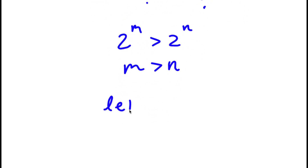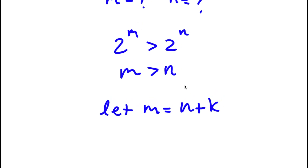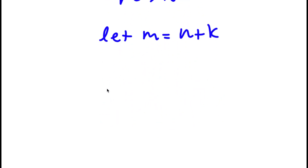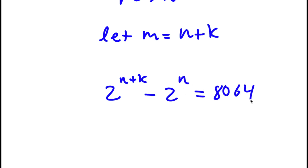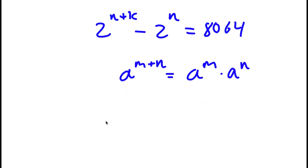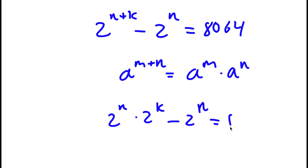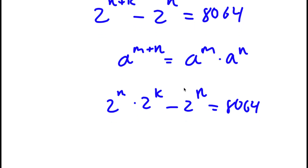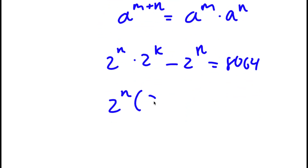I'm going to let m equal to n plus k, where k is an integer. So if m equals n plus k, then I have 2 to the power of n plus k minus 2 to the power of n is equal to 8,064. Using the property that a^(m+n) = a^m × a^n, I get 2^n times 2^k minus 2^n equals 8,064. Factoring out 2^n gives 2^n times (2^k minus 1) equals 8,064.